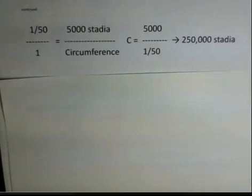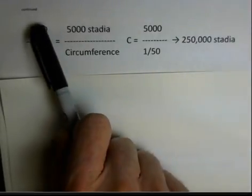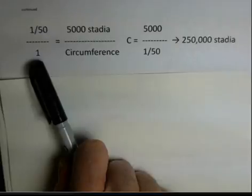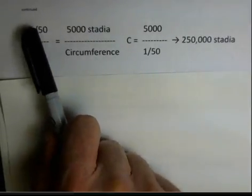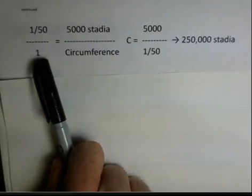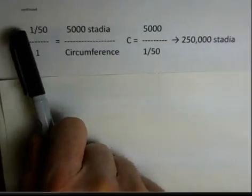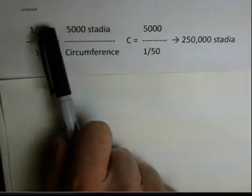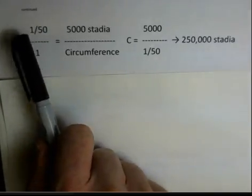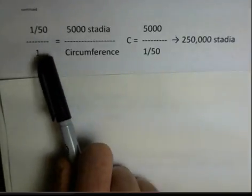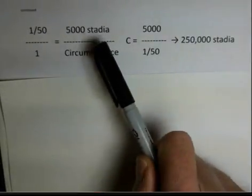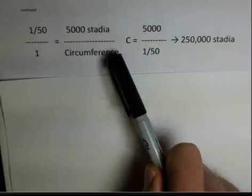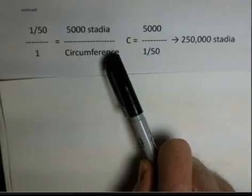So continuing with the work of this proportion, so 1/50th of a circle is to the full circle. These are two angles. And if you want to use 7.2 degrees here and 360 degrees down here, you're welcome to do that. But a proportion, the angle measured for the shadow compared to the full angle of a circle, that's the same ratio as 5,000 stadia divided by the circumference of the circle.